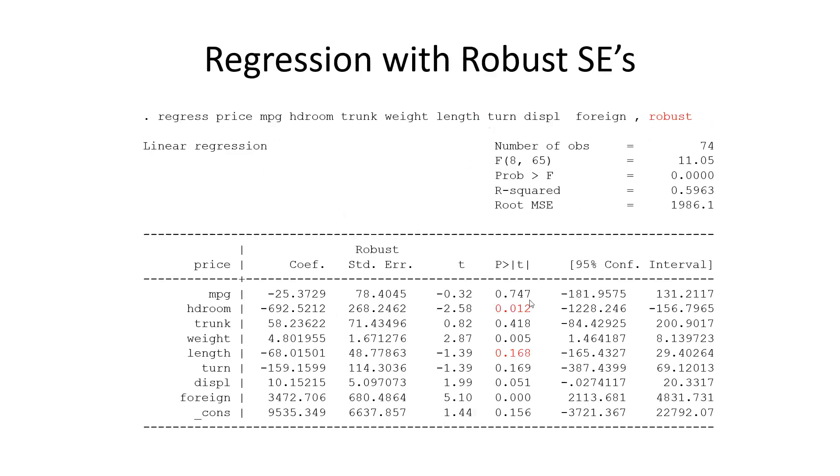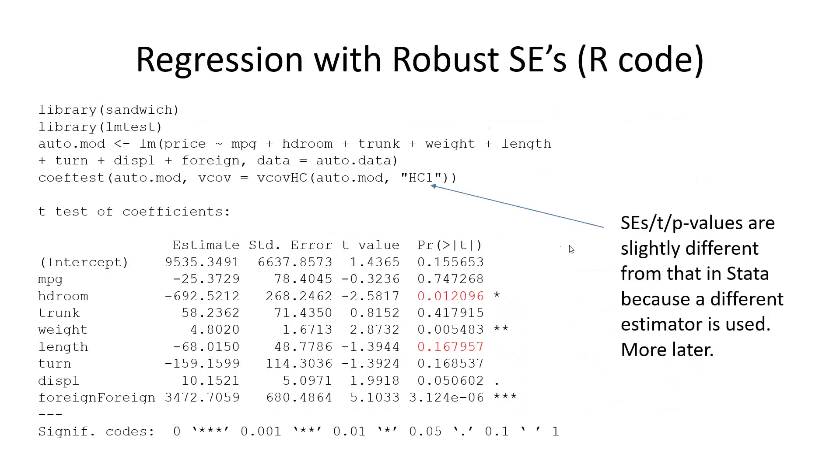And what happens here, we see the two marginal significance levels have been decided in favor of headroom is significant and length is not significant. Foreign and weight remain significant the same, right? So that's interpretable here because we have robust standard errors. So the constant variance plot is no longer a problem.